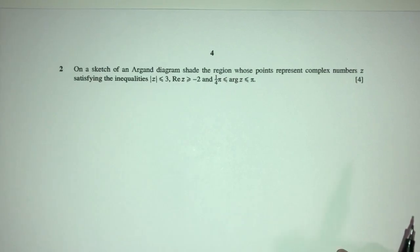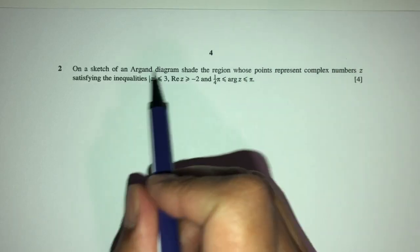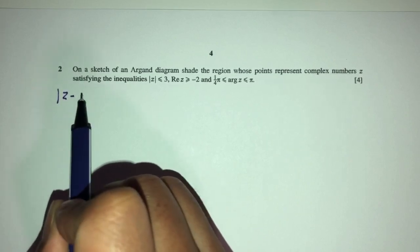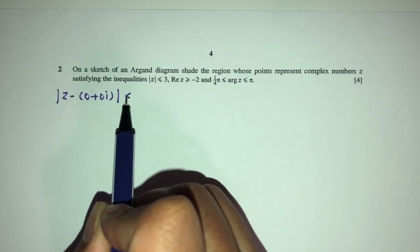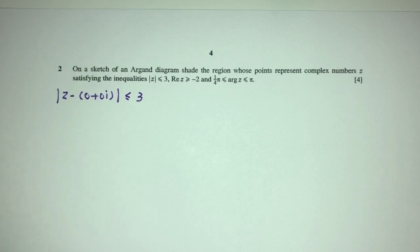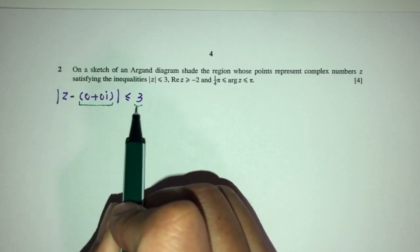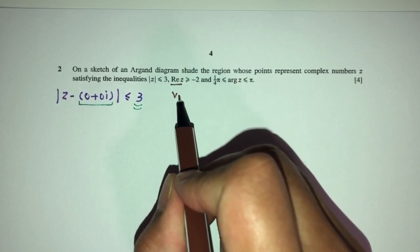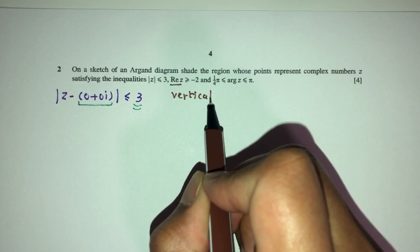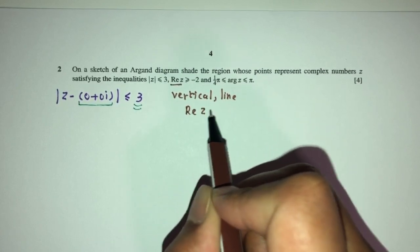Let's move on to question number 2. On a sketch of an Argand diagram, shade the region whose points represent the complex number z satisfying three conditions. For the first condition, we have modulus of z minus 0 plus 0i less than 3. Whenever it is in this form, this is simply a circle with center (0, 0) and radius 3. For the second condition, it's a vertical line where the real value of z equals minus 2.